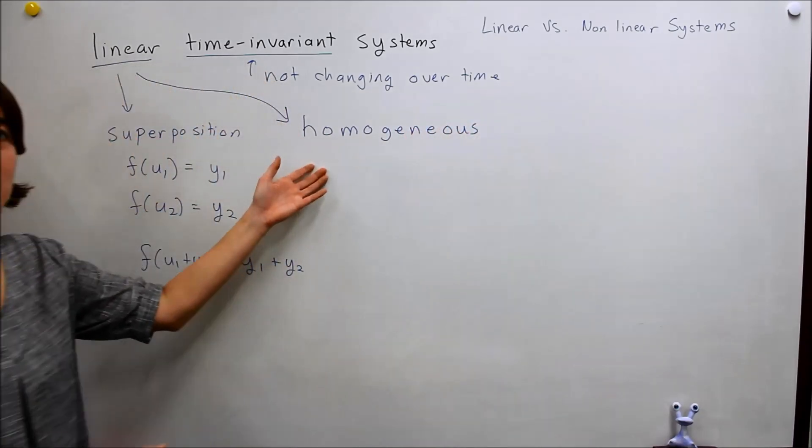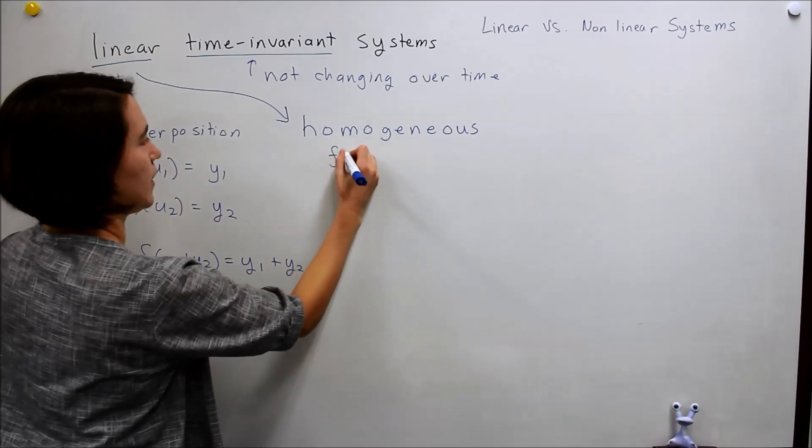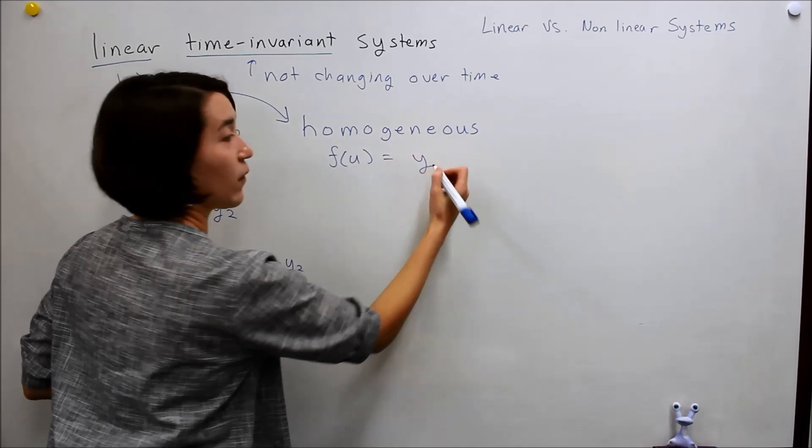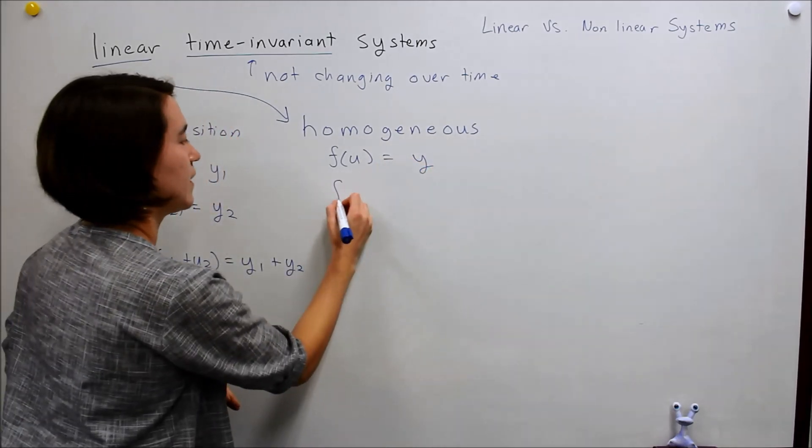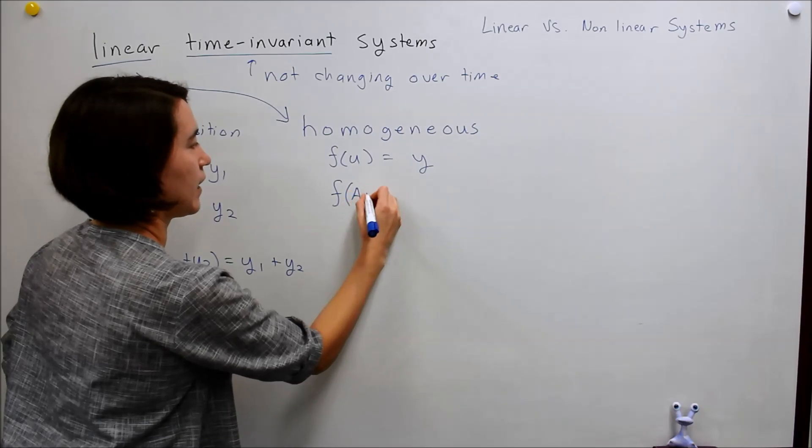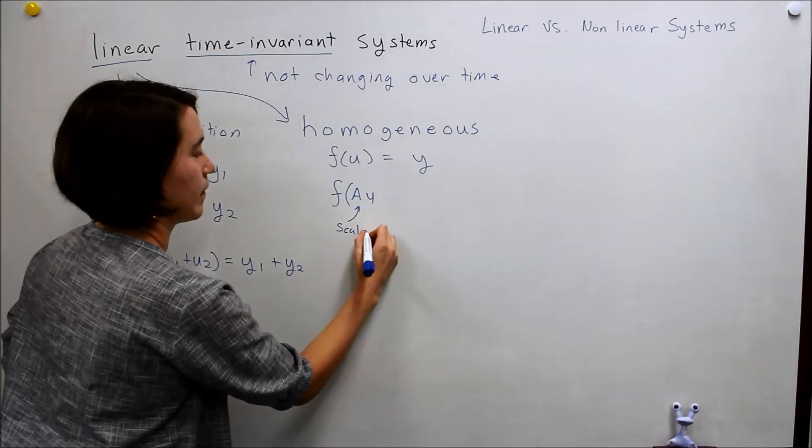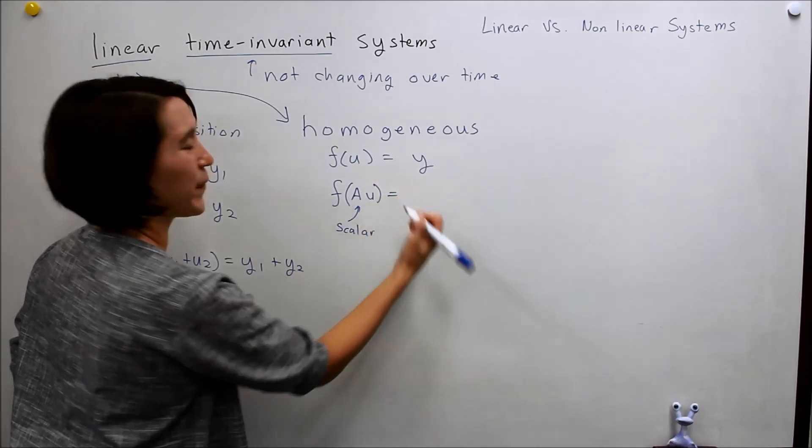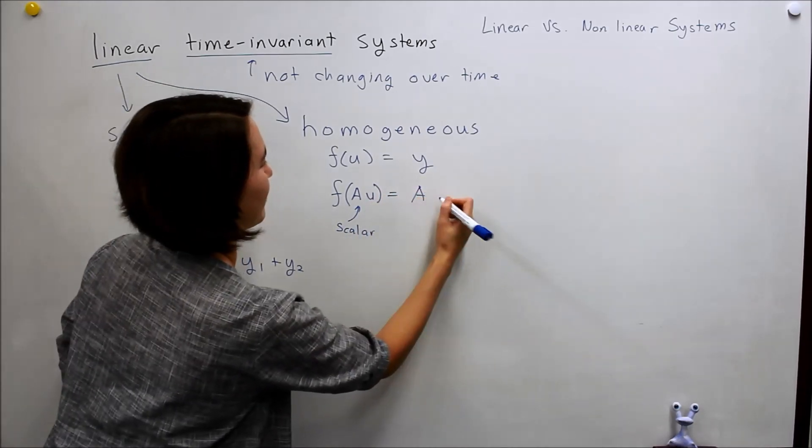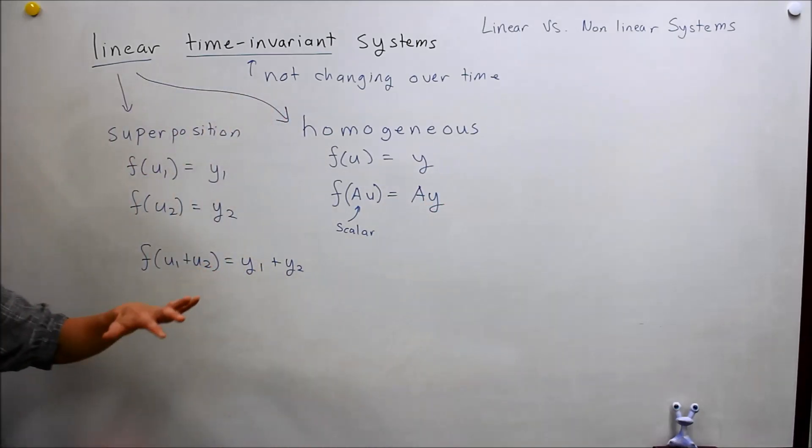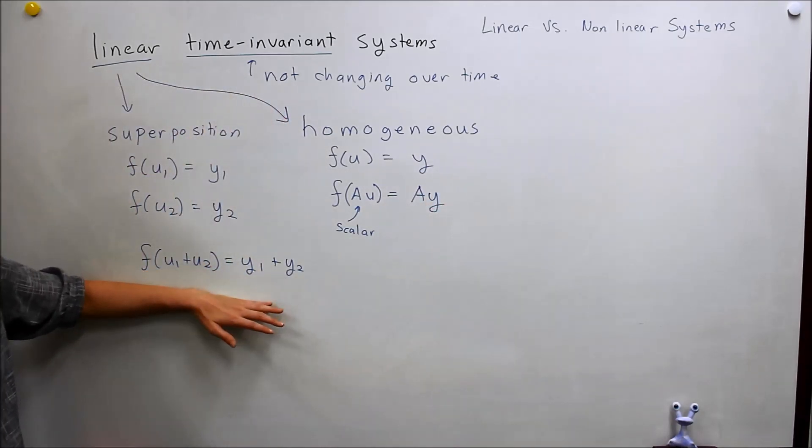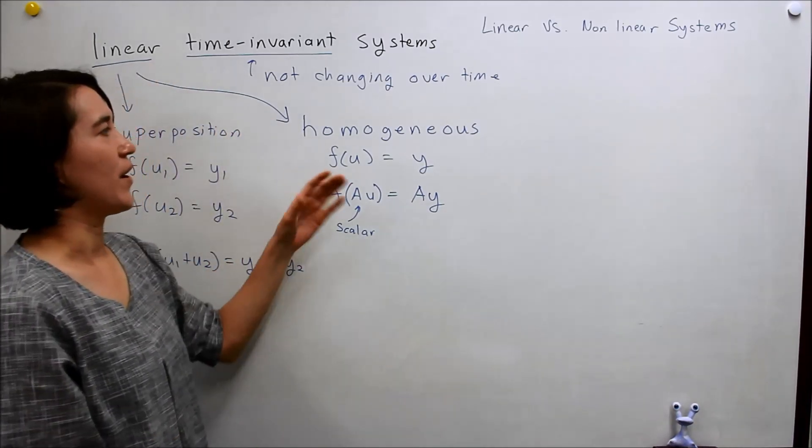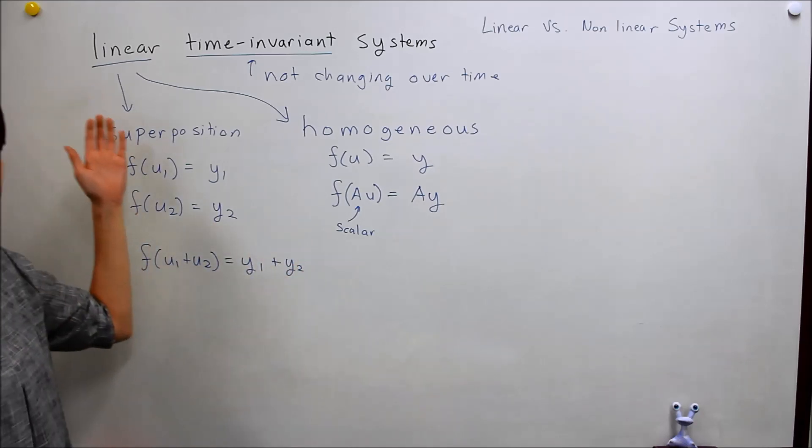So, what does this mean for a system? Well, similarly, if we start with some input here, we get an output of y. If we then scale the input, so a here is a scalar, then our output will also be scaled by the same amount. So, if you're a math person, these two definitions, superposition and homogeneity, are the requirements for a linear system.